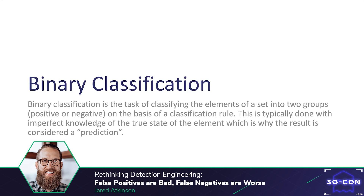Binary classification is defined as the task of classifying the elements of a set into two groups — positive or negative — on the basis of a classification rule. From a detection engineering perspective, consider the elements of a set to represent the events collected from your enterprise, and the two groups — positive or negative — to equate to malicious and benign respectively. This classification decision is made by a detection rule or series of detections.